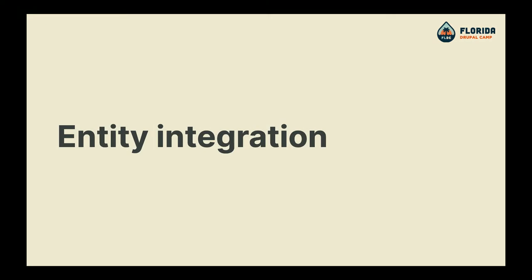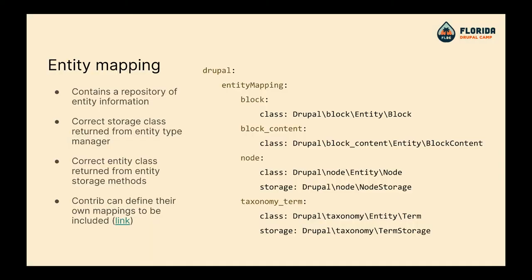The entity integration has gotten a lot of love. We have an entity mapping that says: given this entity type ID, it is this class. We inspect that class to see if it's a config entity or content entity and pick the appropriate default storage if none is specified. When you do entityTypeManager->getStorage('node'), you get back an instance of NodeStorage. If you do load or loadMultiple, it says node or node|null — so when you don't have a null check, PHPStan warns you that it might be null and you might crash your system, encouraging better defensive programming.